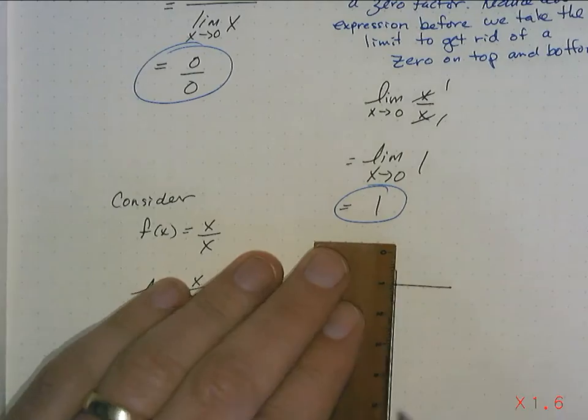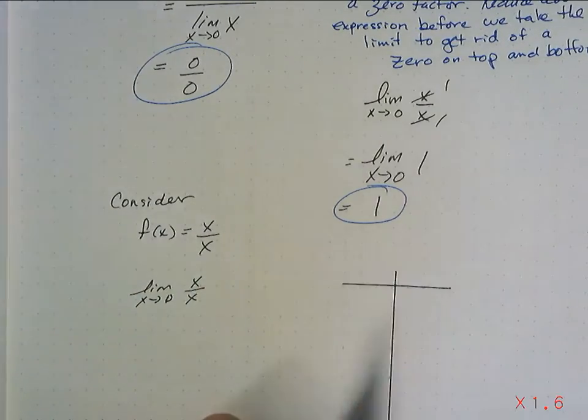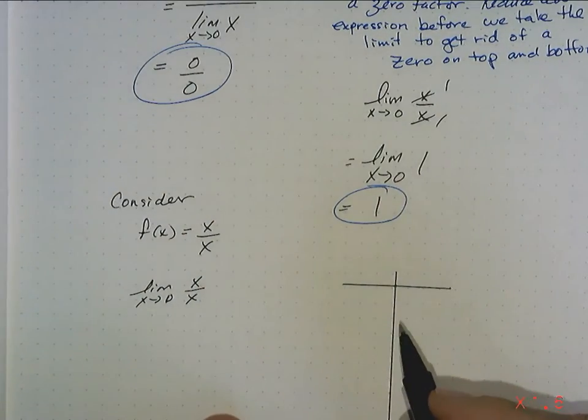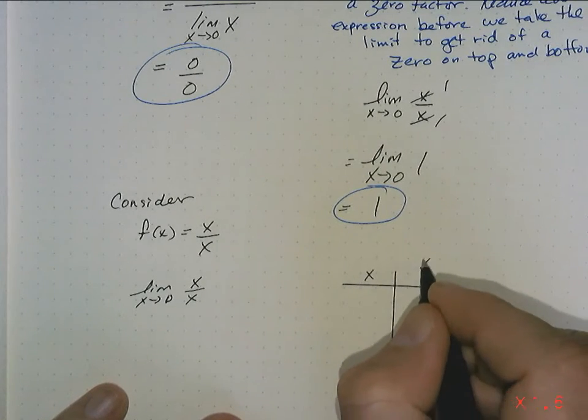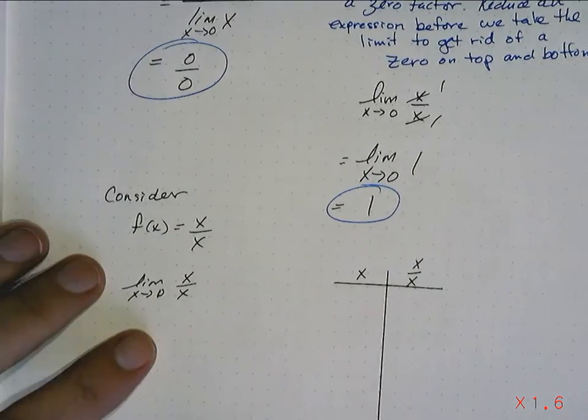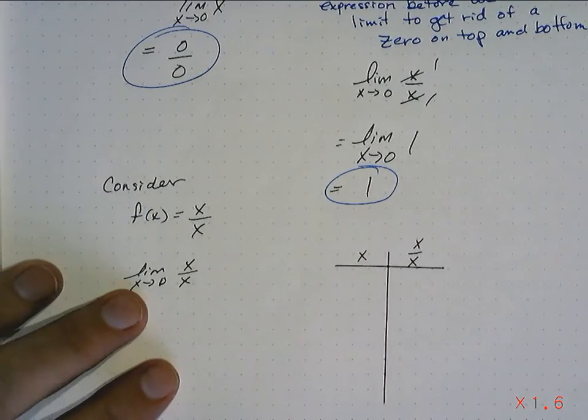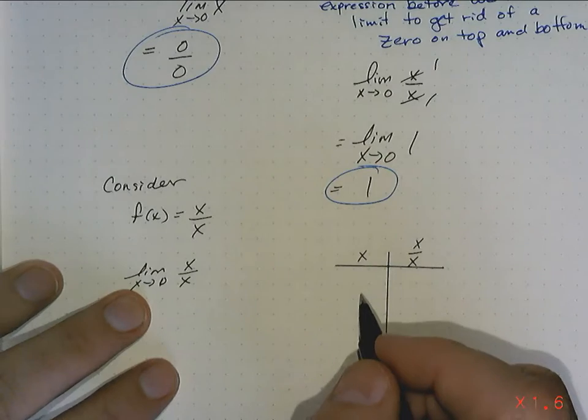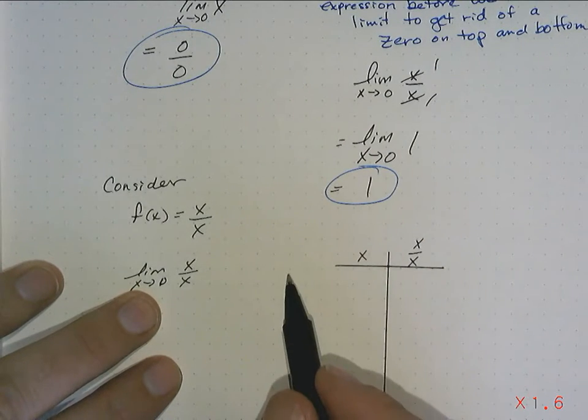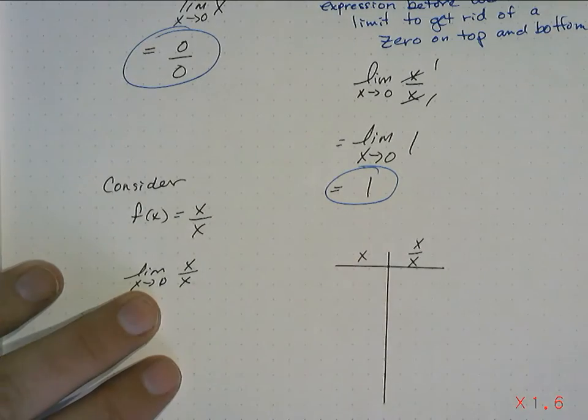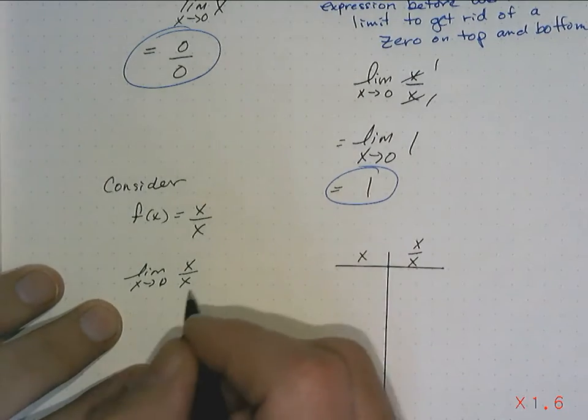And what that's going to look like as a table of values is I would choose values of x that are going to get closer and closer to 1. And I have x over x here. So if I choose values of x that are getting around 1. Now, I'm not doing a perfect limit chart here. I'm not doing a left-hand limit. You know what? Perhaps I should. Let's do a left-hand limit and a right-hand limit.